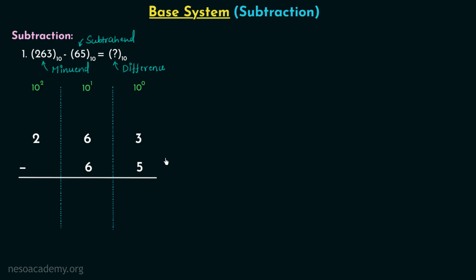3 minus 5 gives us minus 2, so we are getting a negative result. The reason is the digit 5 is larger than the digit 3. Whenever the digit of the subtrahend is greater than the digit of the minuend, we perform borrowing. Borrowing is the process in which we take a value from the digit having a higher place value and add it to the digit having the lower place value. We are going to take the borrow from digit 6, which has a higher place value than digit 3.